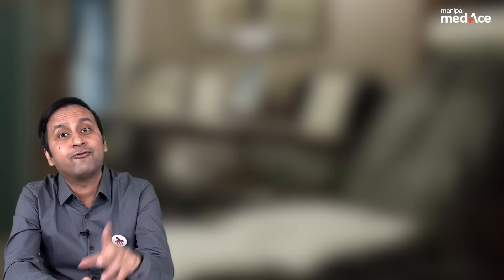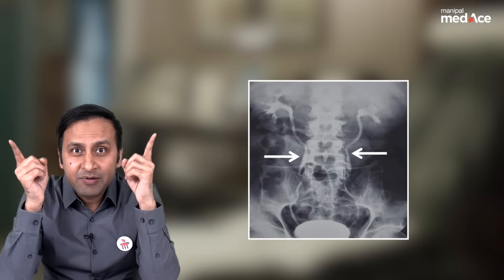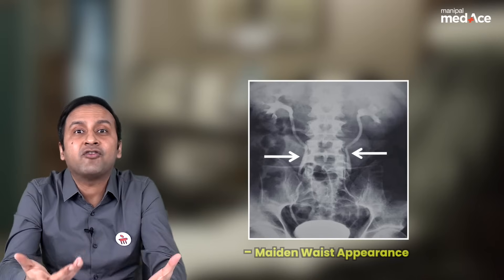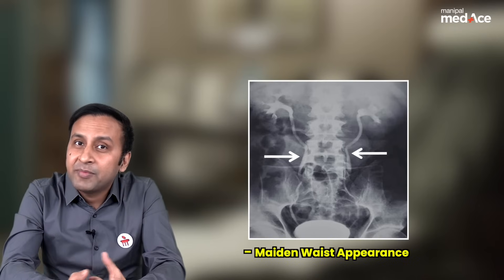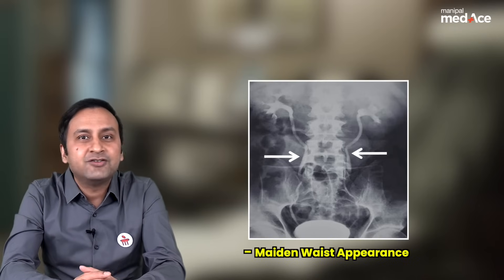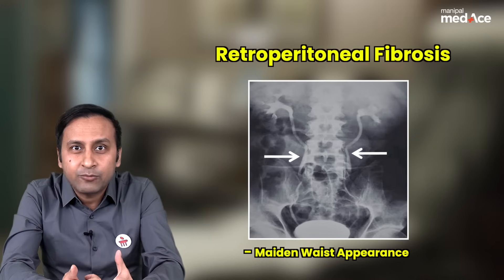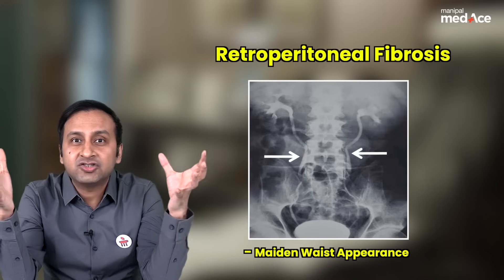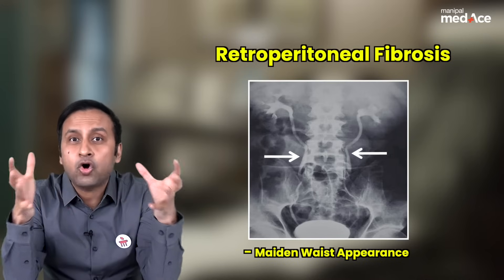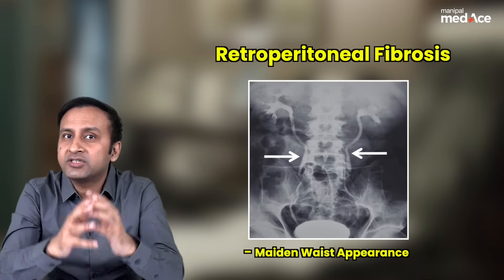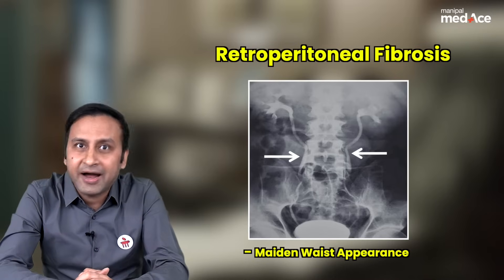Let's talk about our fourth case. In this IVP image, both the ureters appear to have been medially deviated, just like the waist of a maiden. This maiden waist deformity is seen in a condition called retroperitoneal fibrosis, where the fibrotic reaction causes medial deviation of both ureters and is usually associated with upstream hydronephrosis.